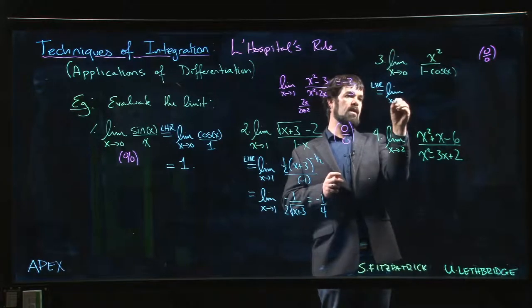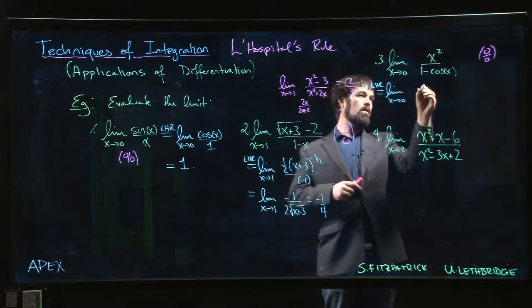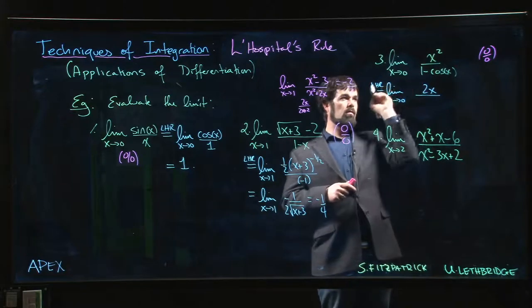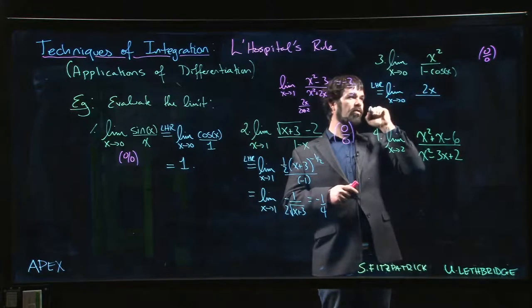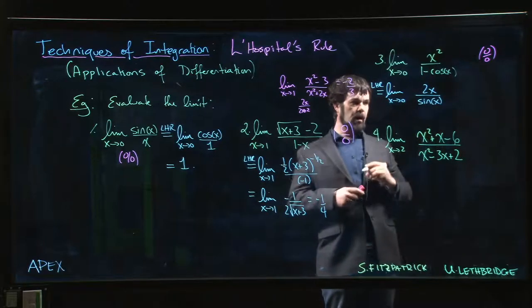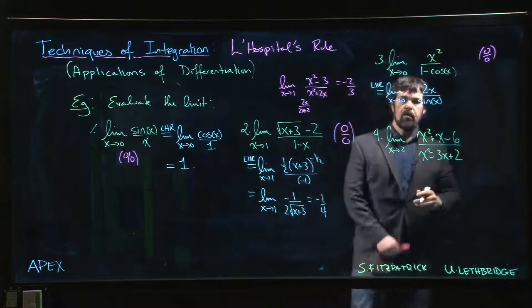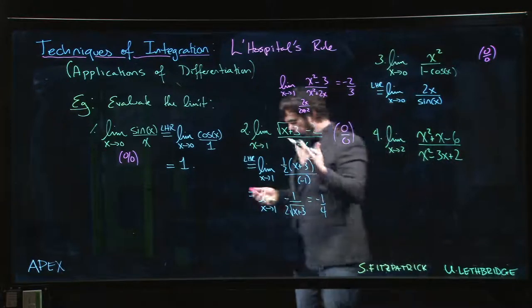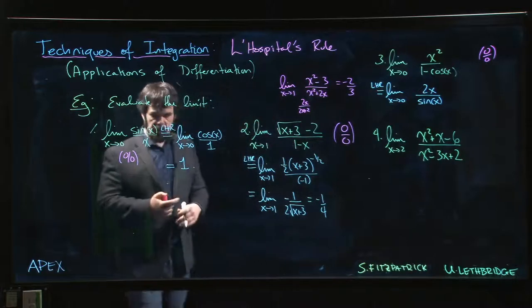We use the limit as x goes to 0, 2x over—so derivative of negative cos is plus sine. Okay, and now you have a choice. I mean, we already know that the limit as x goes to 0 of x over sin x is 1.